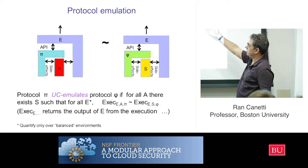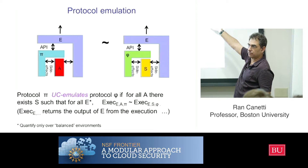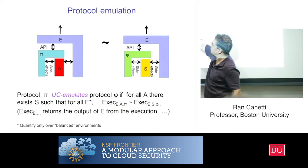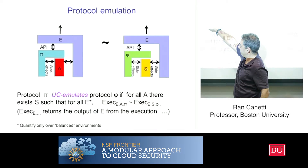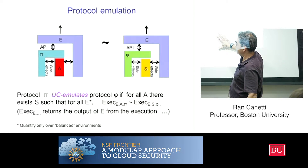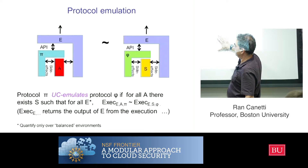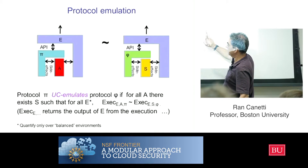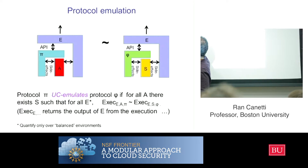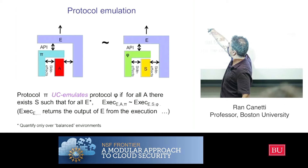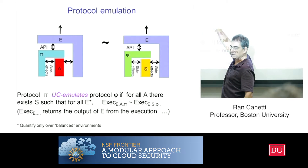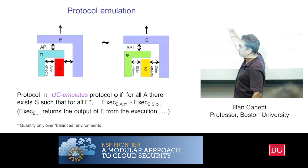This is essentially the same definition as before, except that here I'm allowing an adversary on both sides. This definition turns out to be equivalent to another definition where instead of quantifying for all A, you just consider one specific A — the simple dummy adversary that just relays all instructions of the environment to the parties, just acting as a channel. And then you're really back to the previous definition.